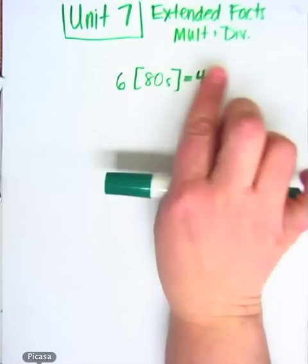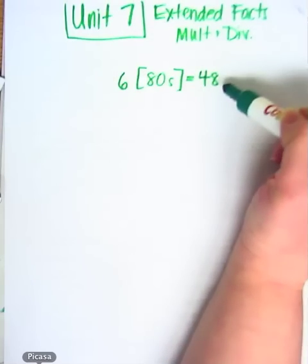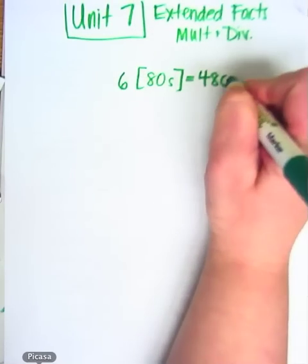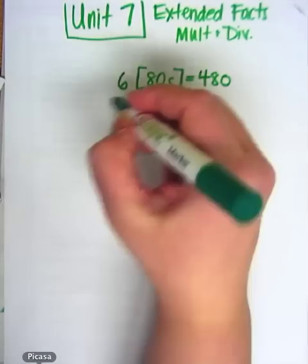Now you covered one zero, which means that it's actually forty-eight times ten. So you would tag on the zero that you covered with your finger, and the answer is four hundred eighty. See? Simple. So, next problem.